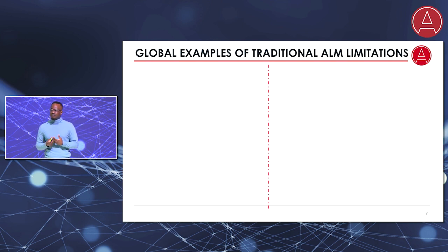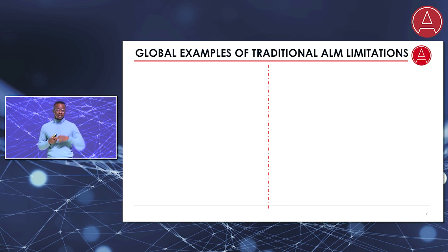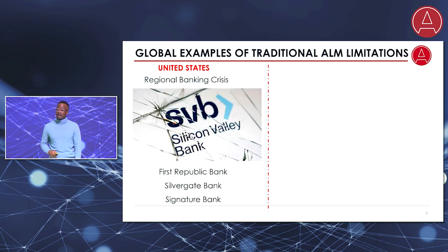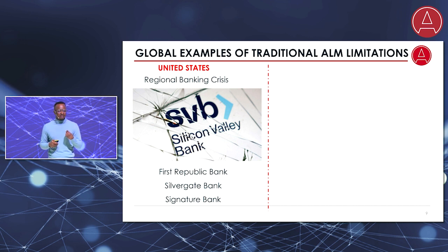Let's have a look at some practical real-life examples which illustrate permeating instances of ALM failures and their consequences. From a global perspective, starting in the US, they've been hit by the regional banking crisis, which resulted in the failure of multiple banks, the most notable being Silicon Valley Bank. There have also been failures in other mid-size banks. The source has been an inability to withstand the rapid rise in interest rates — over 500 basis points of increases over the past few years.